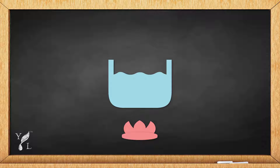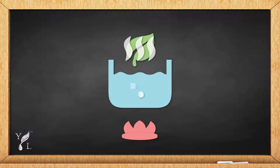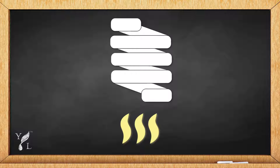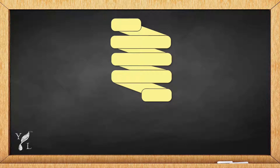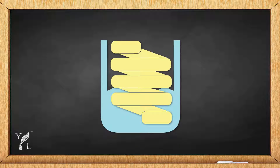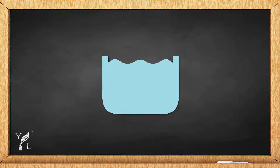During steam distillation, we place a water bath over a heat source with the aromatic plants suspended over the water. As the water is heated, steam is generated and rises through the plant material. That steam, now heavy with essential oil molecules, moves into a condensing coil. The condensing coil is warm on the inside but surrounded by a cool water bath, causing the steam to condense into floral water and essential oils.